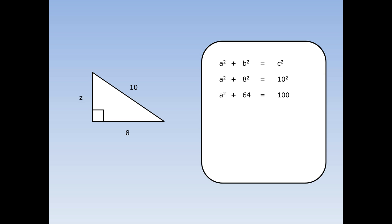Really I want to get A squared by itself, so I'm going to take away 64 from both sides. The A squared is still there; 64 take away 64 leaves nothing, and I've got 100 take away 64 on the other side. 100 take away 64 is 36. Now I've got A squared equals 36. But I don't really want to know A squared — I want to know A. So I'm going to square root both sides. The square root of A squared is A, and the square root of 36 is 6. So the short side Z equals 6.